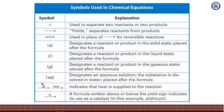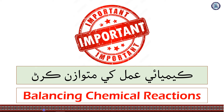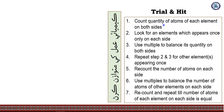In brackets, the delta symbol (heat) placed above the arrow indicates that heat is supplied to the reaction. A formula written above or below the yield sign indicates its use as a catalyst. In this example, it is platinum (Pt).